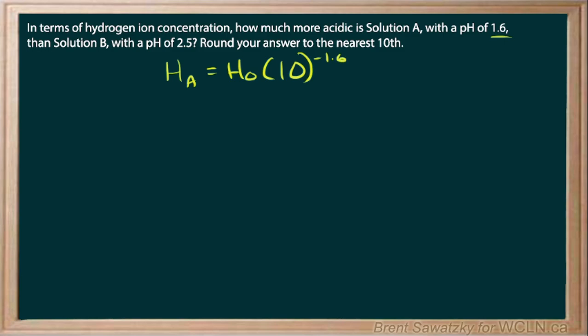Again, the negative just helps with our comparison. H_B is H₀ times 10 to the power, and in this case, it has a pH of 2.5, so negative 2.5.